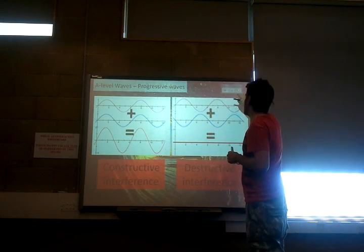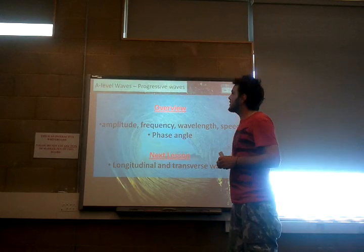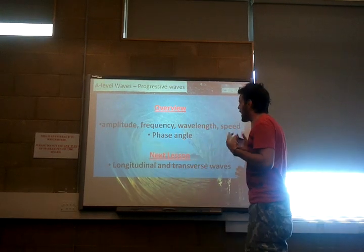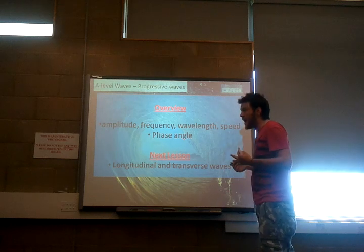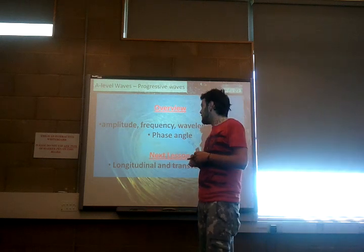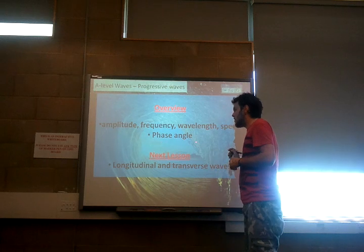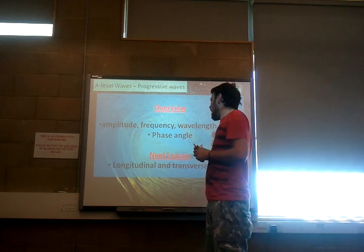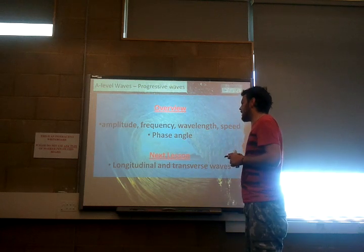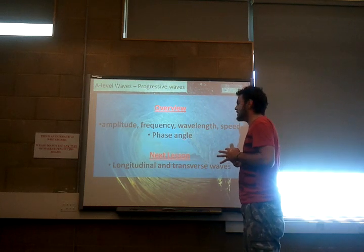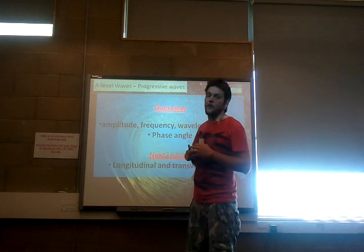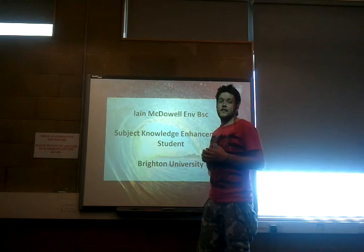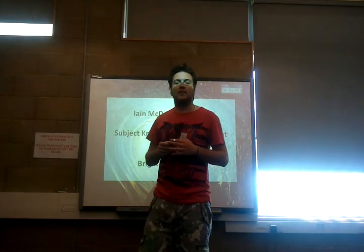We will return to interference in more detail in a later lesson. That's the end of today's lesson on progressive waves — we've covered the two types of waves, amplitude, frequency, wavelength, speed, time period, and had a first look at phase angle and interference. Next lesson, we'll go into more detail on the differences between longitudinal and transverse waves.